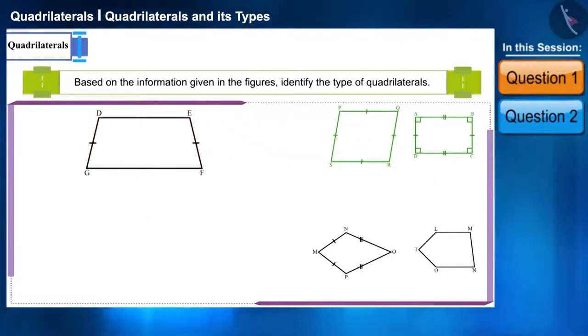In the third figure, in the quadrilateral DEFG, only one pair of opposite sides are parallel and the other pair which are not parallel, both DG and EF are equal. Therefore it is an isosceles trapezium.